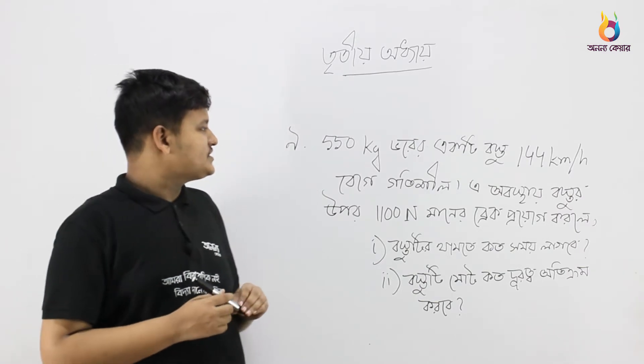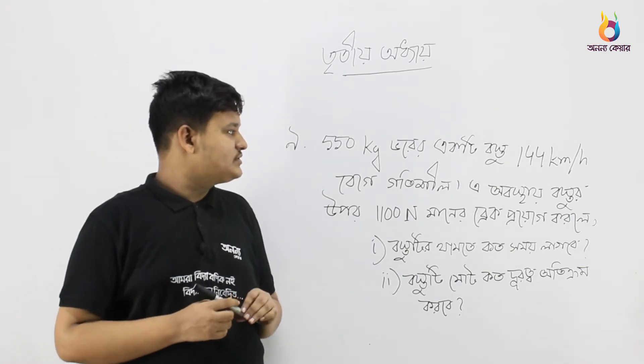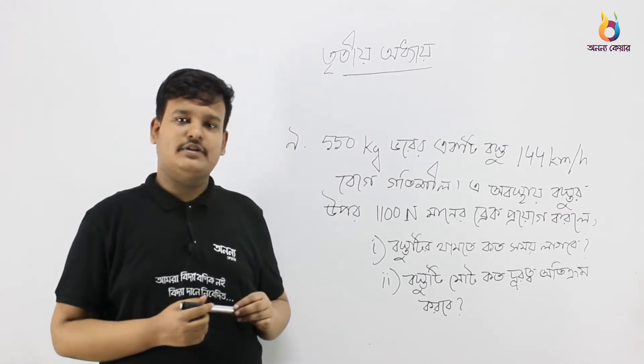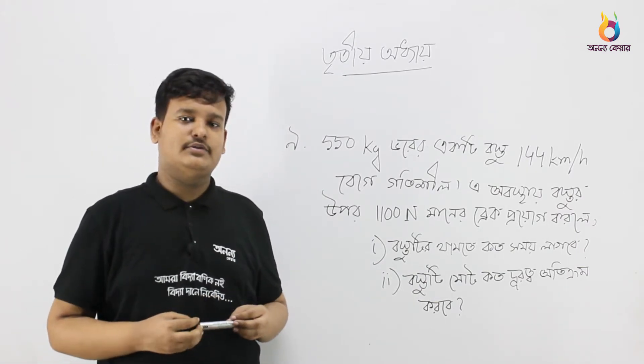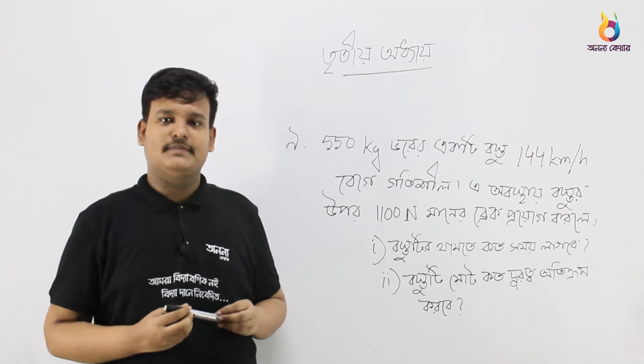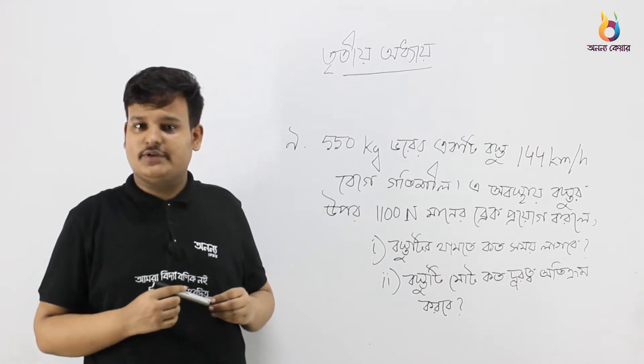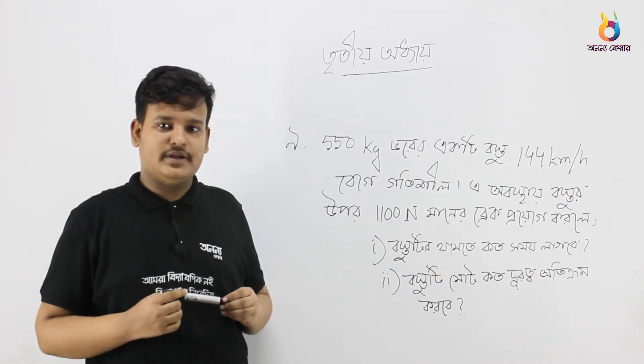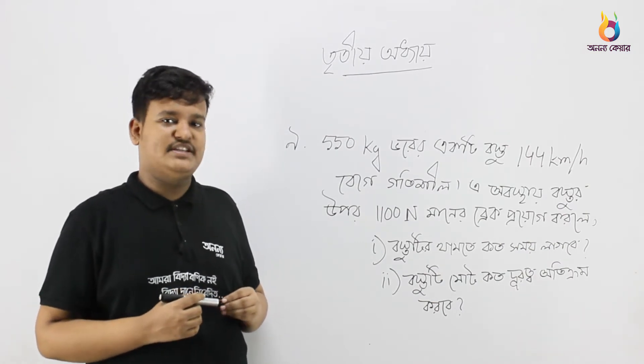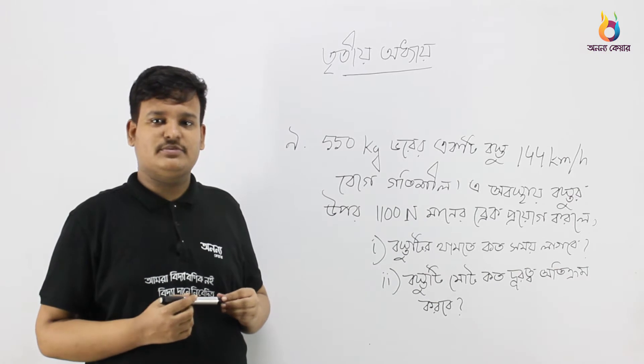Now, a train is traveling at 144 km per hour. That means the initial velocity is 144 km per hour. We need to convert this to meters per second.